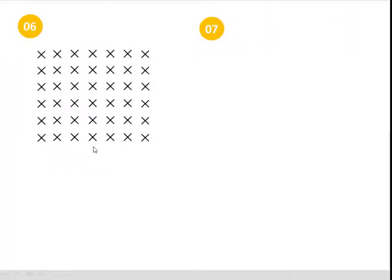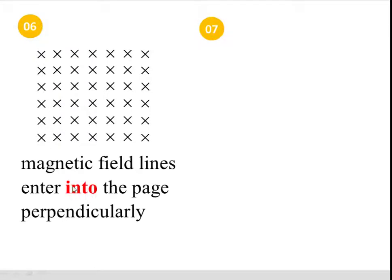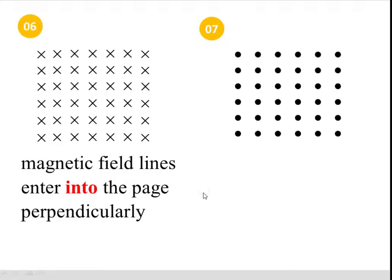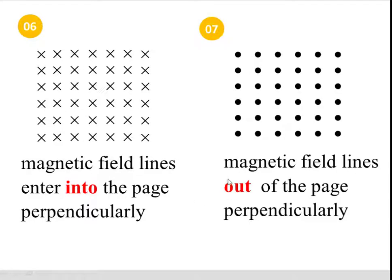Symbols of the magnetic field can be represented as follows. Magnetic field lines entering into the page perpendicularly are represented by a cross. Whereas a dot means that the magnetic field line is coming out of the page perpendicularly.